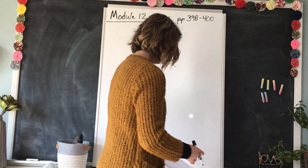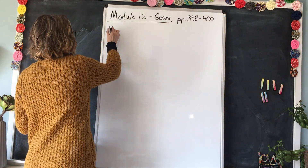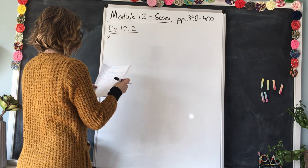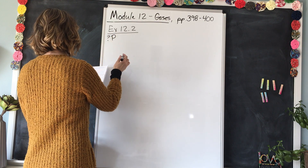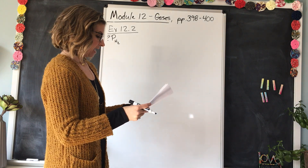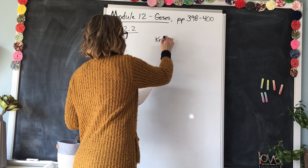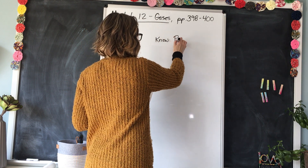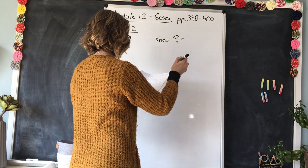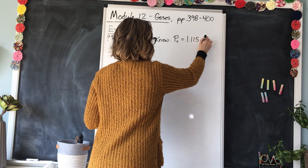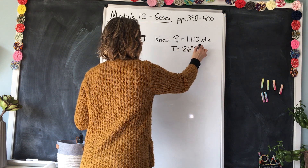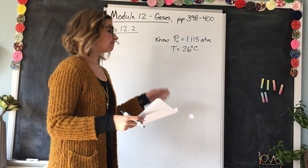Let's write down what we are looking for. We are looking for the pressure of hydrogen gas, H2. What do we know? We know the total pressure, written as P with a subscript T. The total pressure of gas collected was 1.115 atmospheres, and we know the temperature was 26 degrees Celsius.